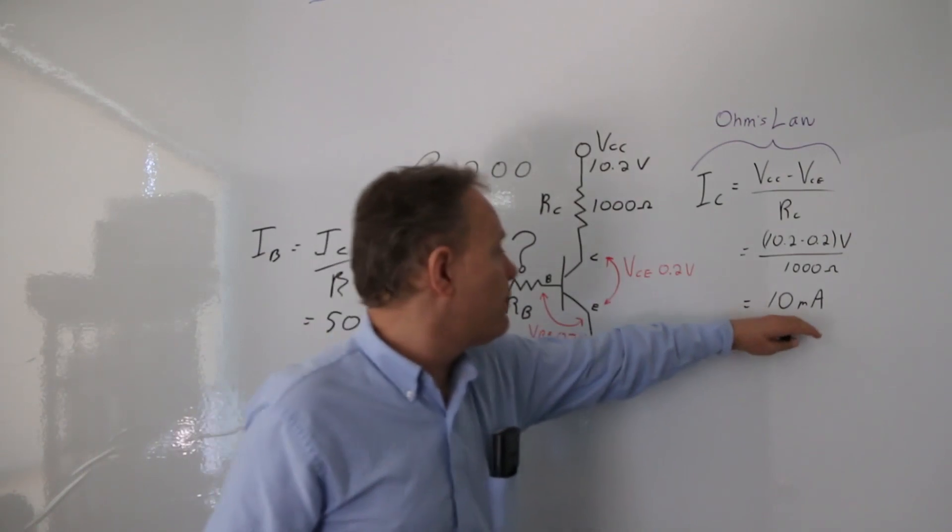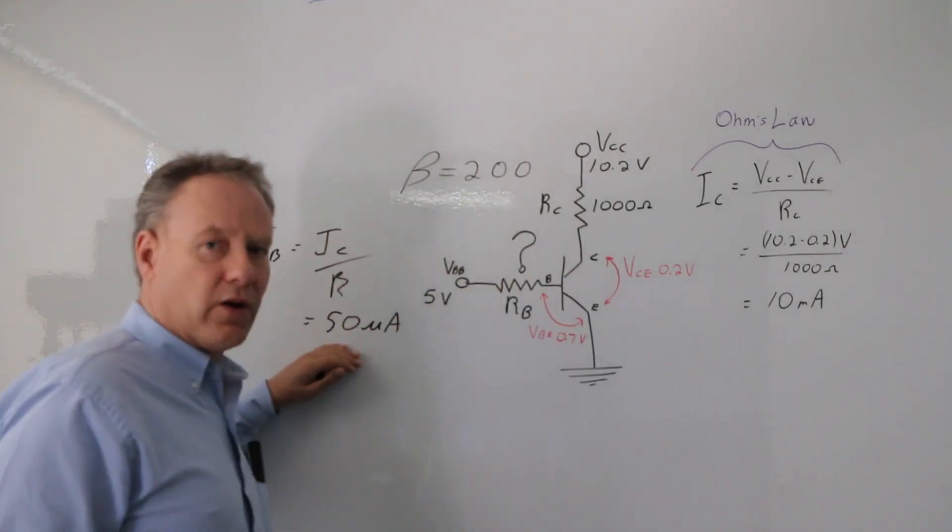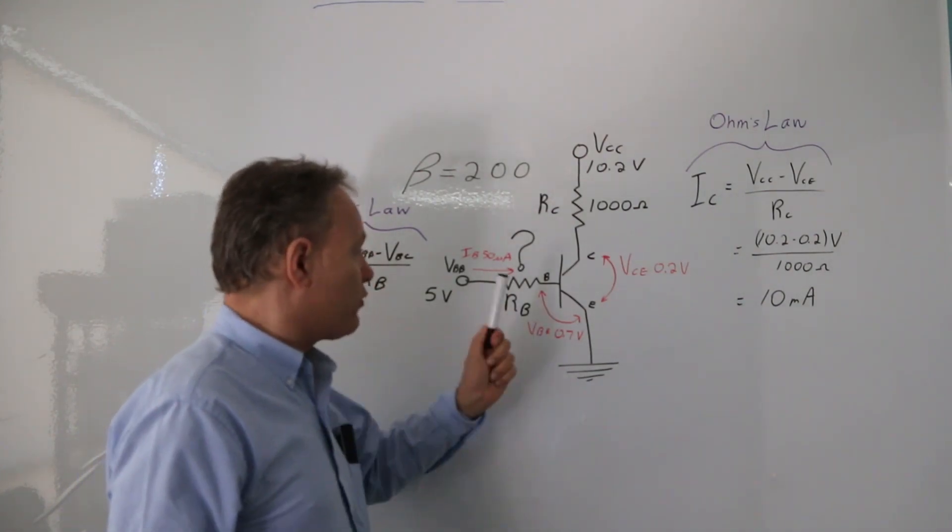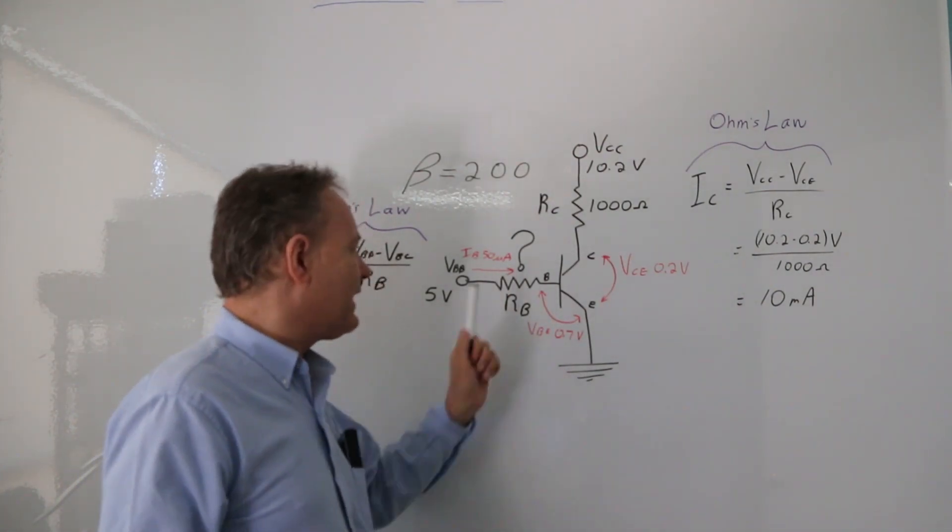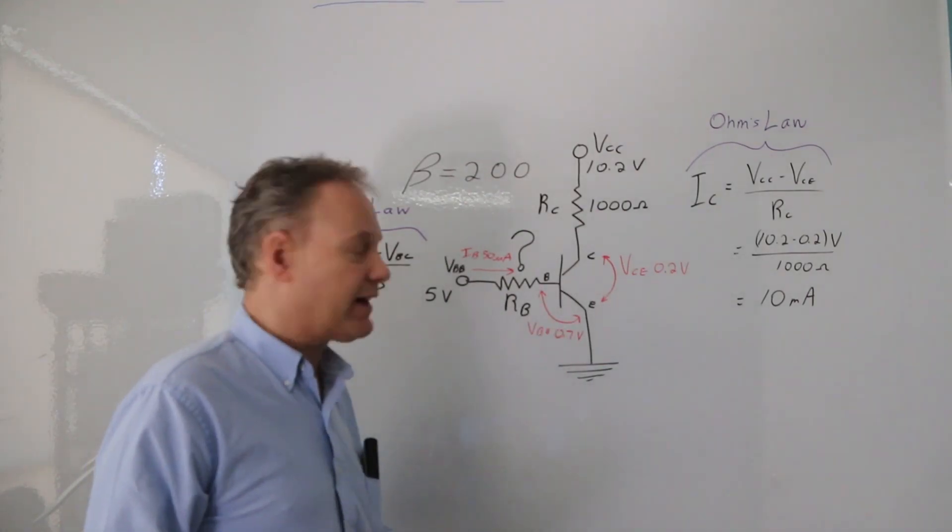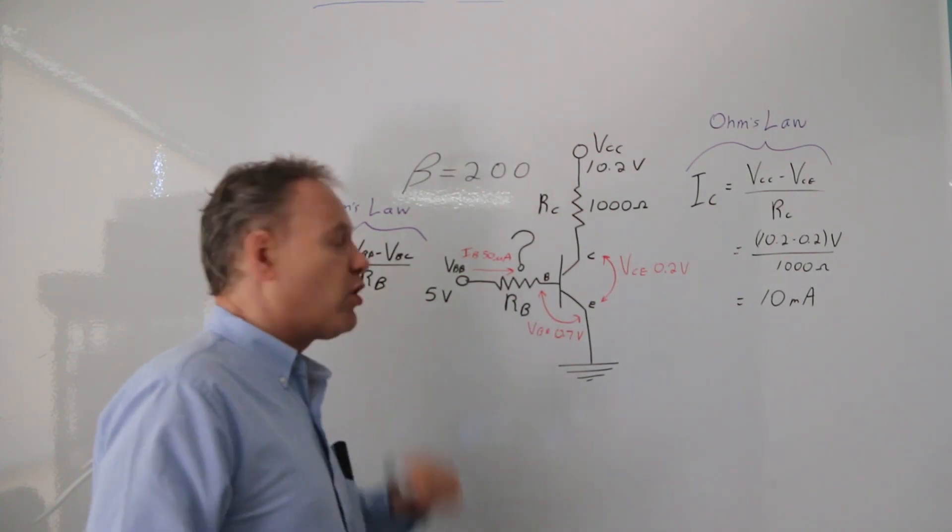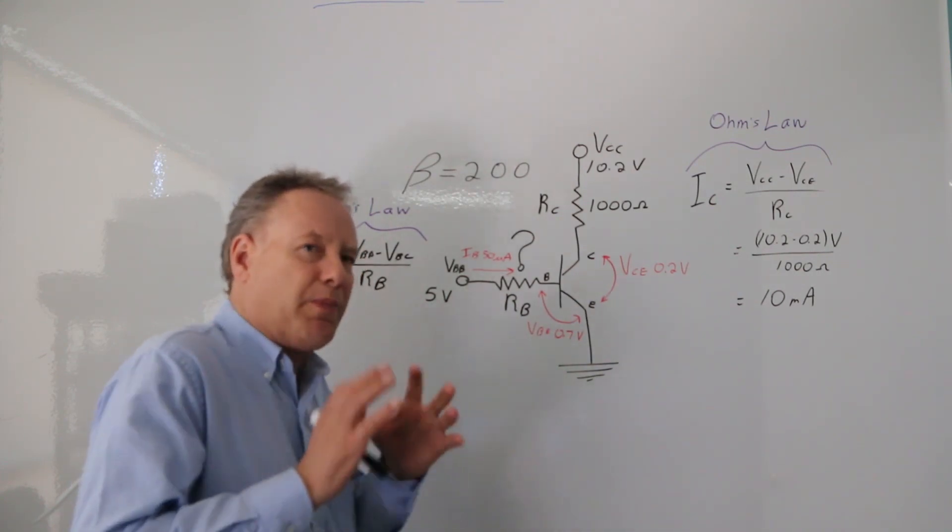So essentially, it's 10 milliamps divided by 200, which is 50 microamps. So now we know that we need at least 50 microamps to go through to fully saturate that. And I know that I don't know this resistance, but I do know my voltage here.